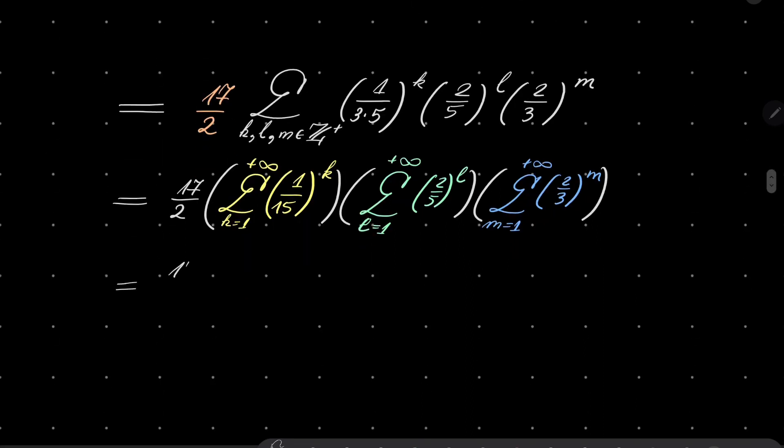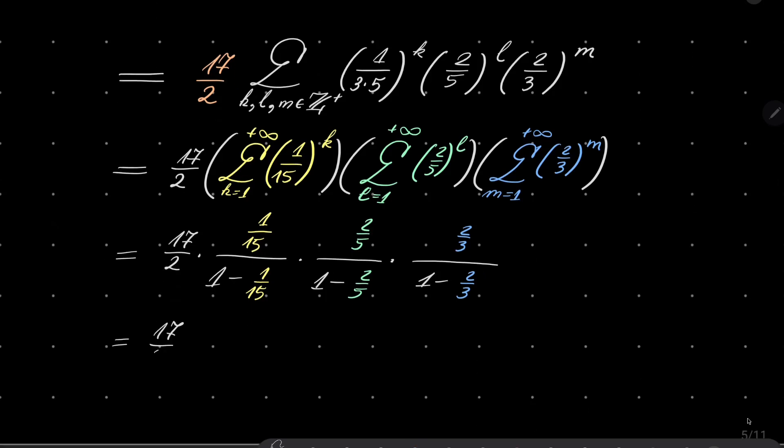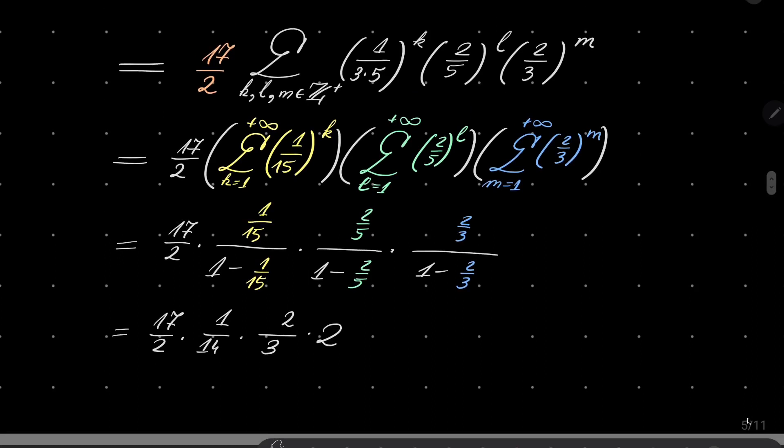And these series are very easy to compute. Because we take the first term and we divide by 1 minus that term. Likewise here we have this, and here we have this. And now the rest is computations. So we have here 1 over 14, here we have 2 over 3, and finally here we have 2. And it's all equal to 17 over 21. And this is our answer. Our series over all triples equals 17 over 21.